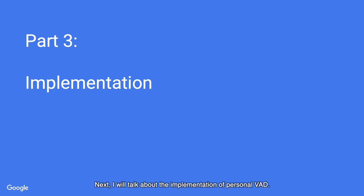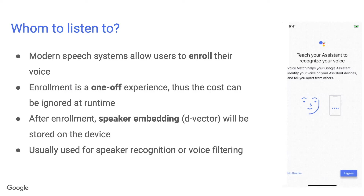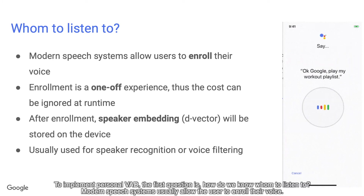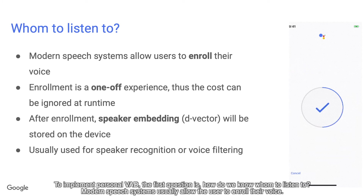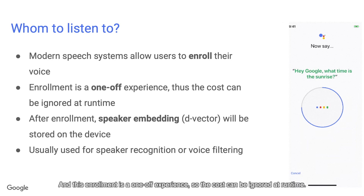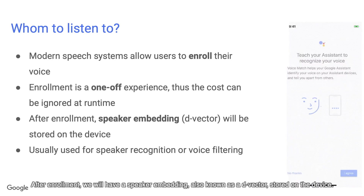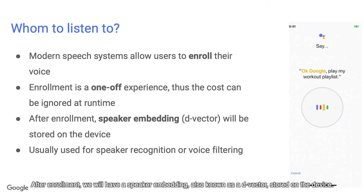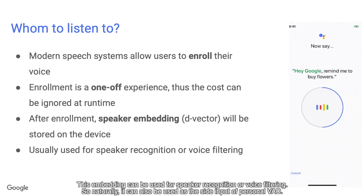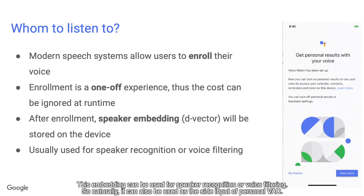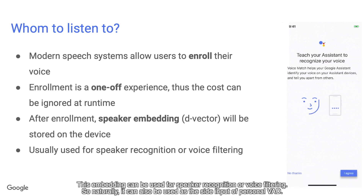Next, I will talk about the implementation of Personal VAD. The first question is: how do we know whom to listen to? Modern speech systems usually allow the user to enroll their voice, and this enrollment is a one-off experience, so the cost can be ignored at runtime. After enrollment, we will have a speaker embedding, also known as a D-vector, stored on the device. This embedding can be used for speaker recognition or voice filtering, and naturally it can also be used as the side input of Personal VAD.